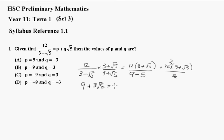And that's equal to p plus q root 5, which of course means that p will equal 9, and q will equal 3. So where's that? Well that's going to be B.